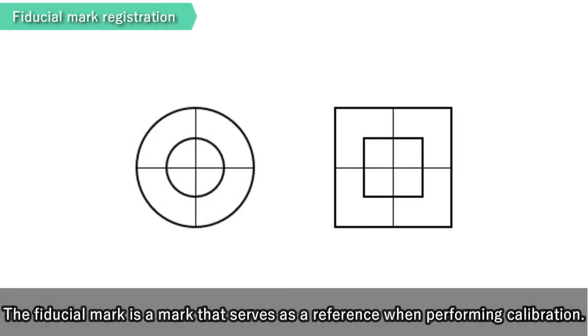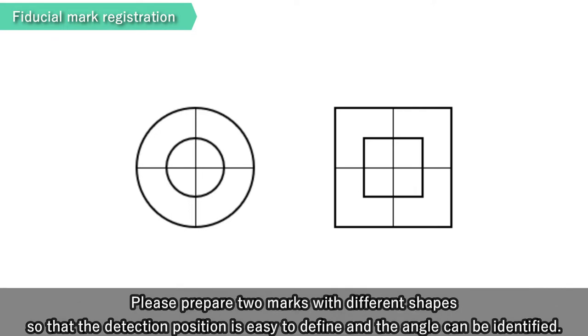The fiducial mark is a mark that serves as a reference when performing calibration. Please prepare two marks with different shapes so that the detection position is easy to define and the angle can be identified.